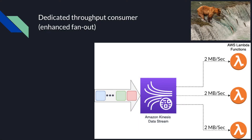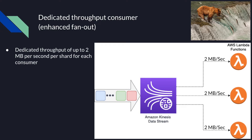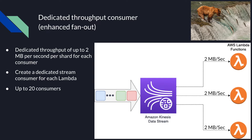Moving on to the second type of stream consumer, which is a dedicated throughput consumer also known as Enhanced Fanout. To minimize latency and maximize read throughput, you can create a data stream consumer with Enhanced Fanout. An Enhanced Fanout consumer gets an isolated connection to the stream that provides a 2 MB per second output throughput. It doesn't impact other applications reading from the stream, and you can have up to 20 stream consumers attached to a single stream. Note that you can only have a single Lambda function using a given Enhanced Fanout consumer, so you will need to create a separate stream consumer for each Lambda function.